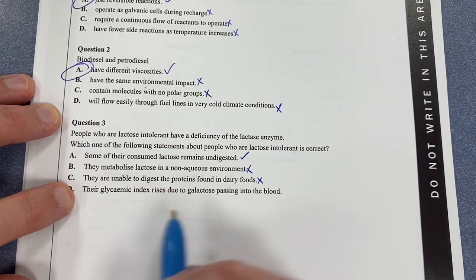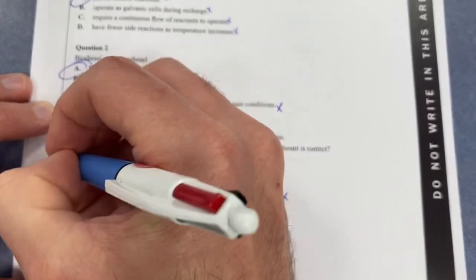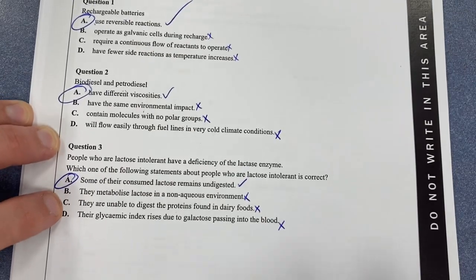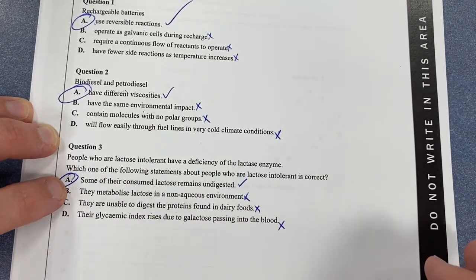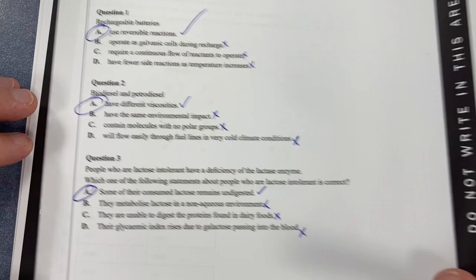Their glycemic index rises - it's nothing to do with glycemic index. It's going to be A as our answer, because lactose intolerant people can't digest lactose because they lack the enzyme.